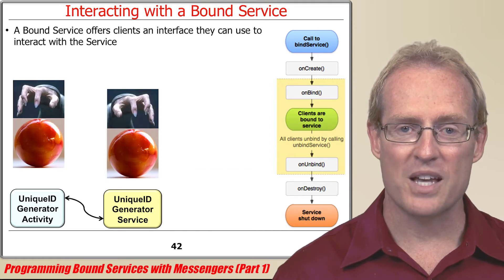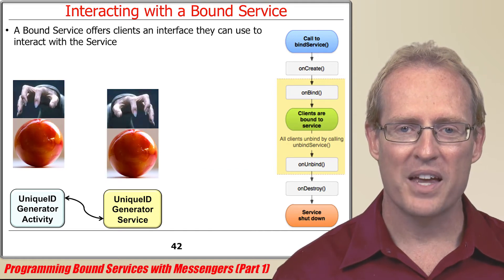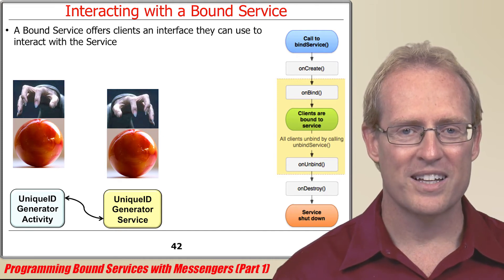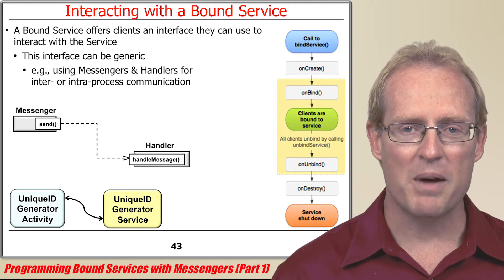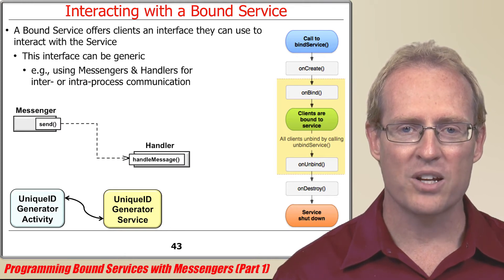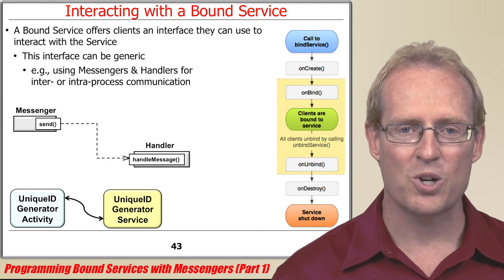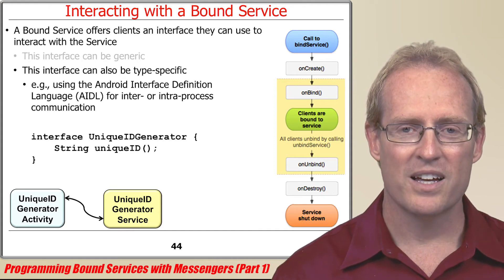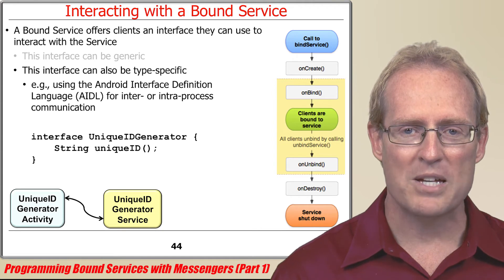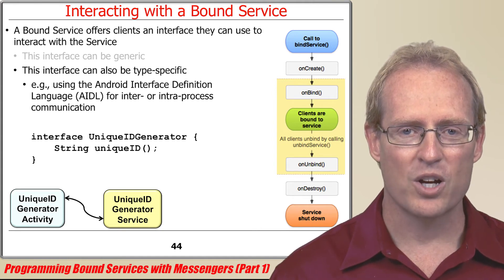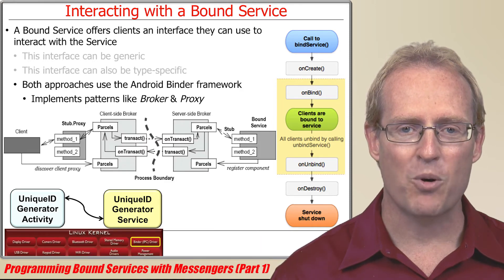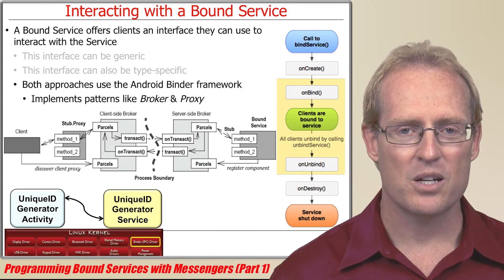The client can interact with the service after the connection is established and the onServiceConnected method returns the interface to the communication channel. This interface can be generic, such as the mechanisms that perform inter-process communication in the unique ID generator application via send and handleMessage calls on messenger and handler objects respectively. An interface can also be type-specific, such as mechanisms for inter-process communication based on the Android Interface Definition Language, shown in an upcoming video. Both approaches use the Android binder framework and implementation patterns such as broker and proxy.